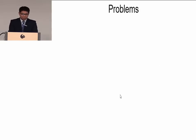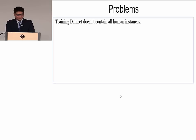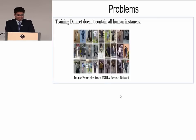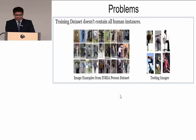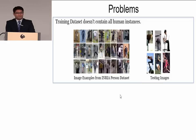There are two problems with current human detectors. First, the training dataset doesn't contain all human instances. For example, this figure shows a dataset where the humans are in standing positions. If we train a human detector using this dataset and test on images where humans have unusual poses, like jumping or running, the detector may probably fail.